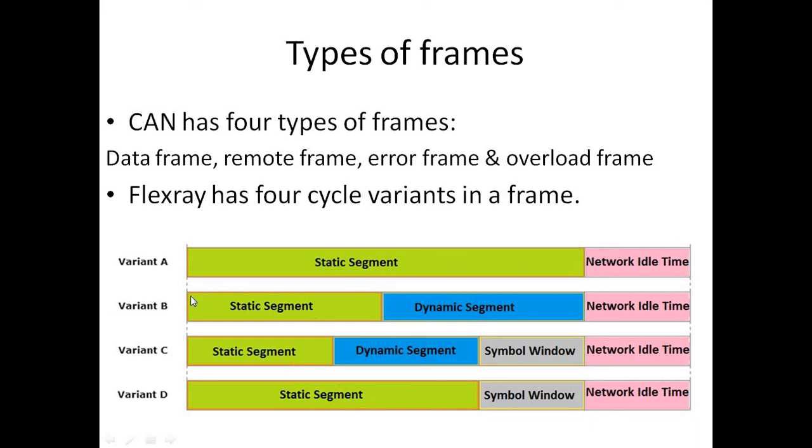Variant B, where you have static segment and you have optional dynamic segment and network idle time. And Variant C, where you have static segment, dynamic segment, symbol window, and network idle time. This is the third variant.